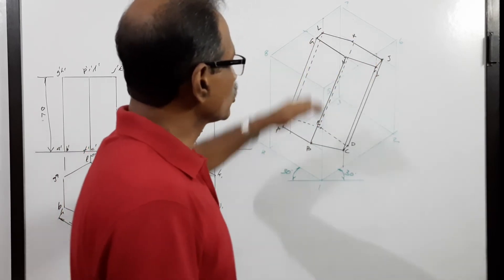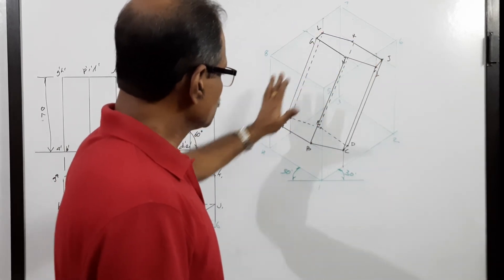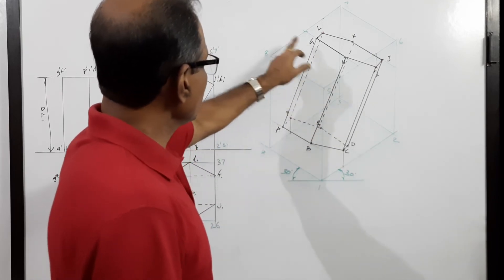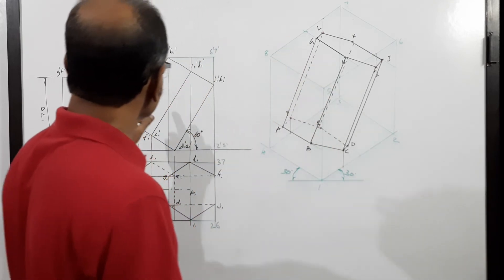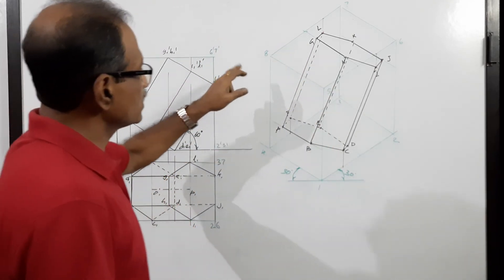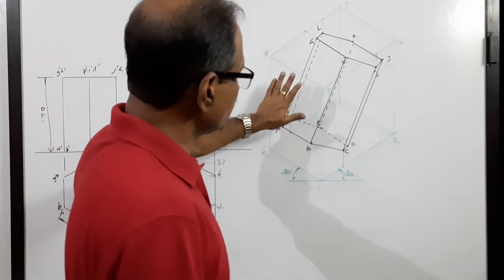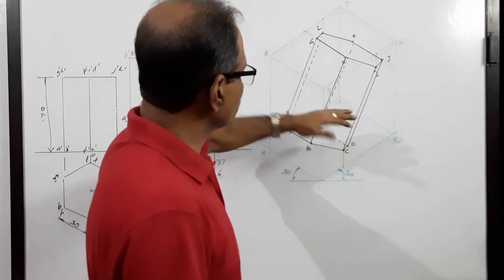The top — A, B, C, D, E, F, G, H, I, J, K, L — will be visible. The part A, B, F, G, H — meaning A, B, G, H — will be visible. This side will also be visible.